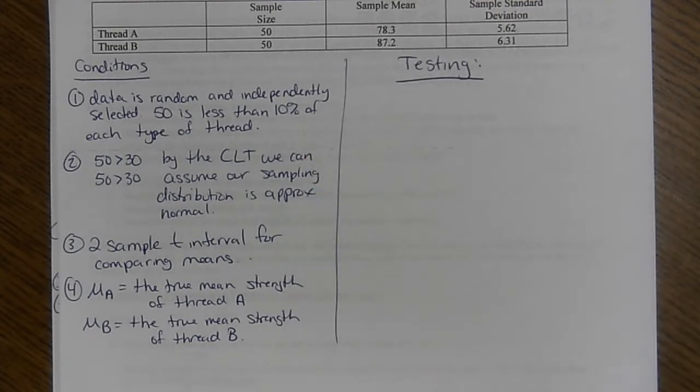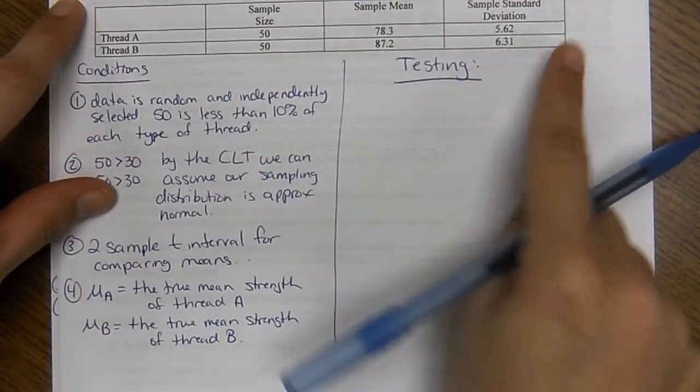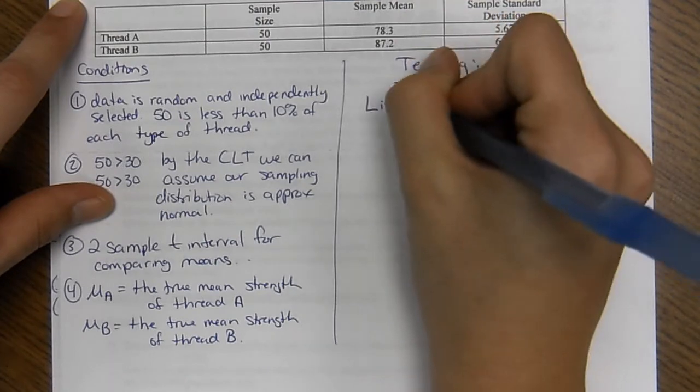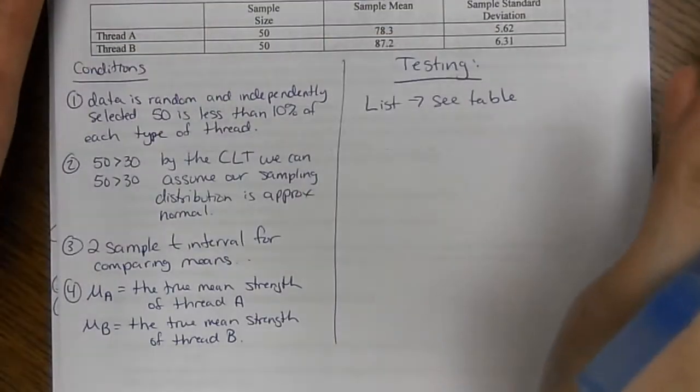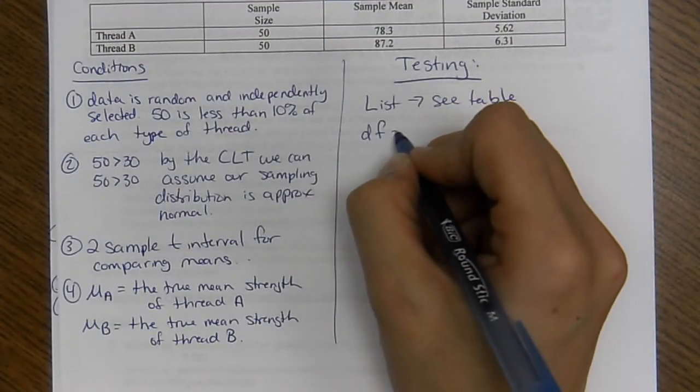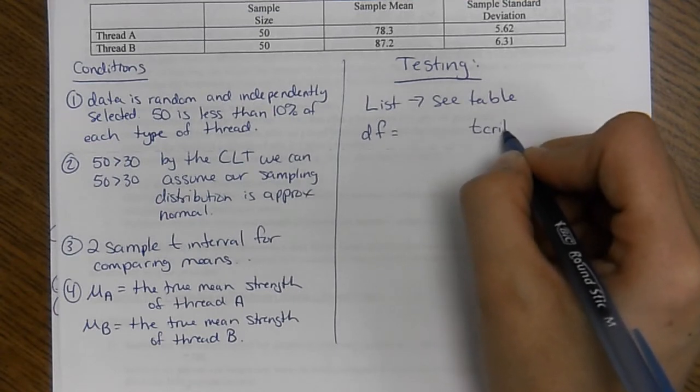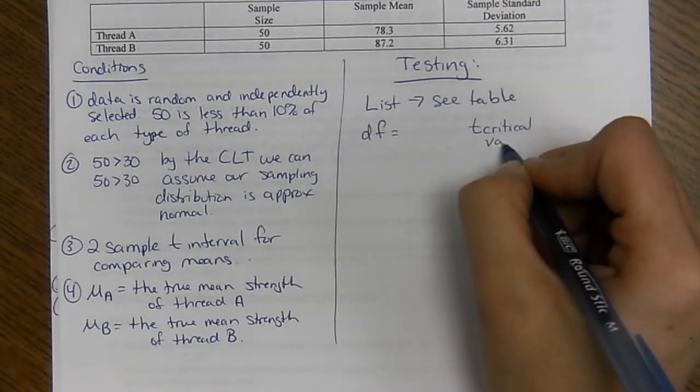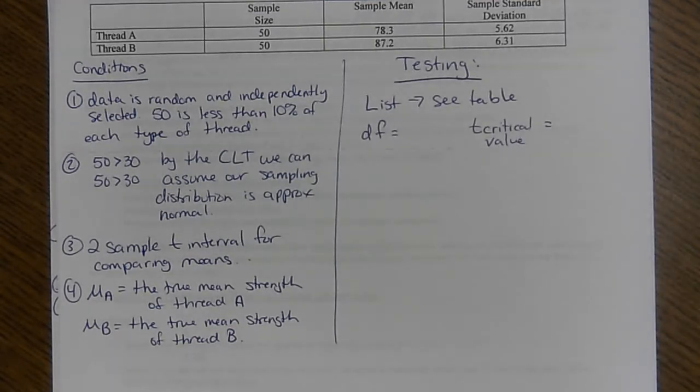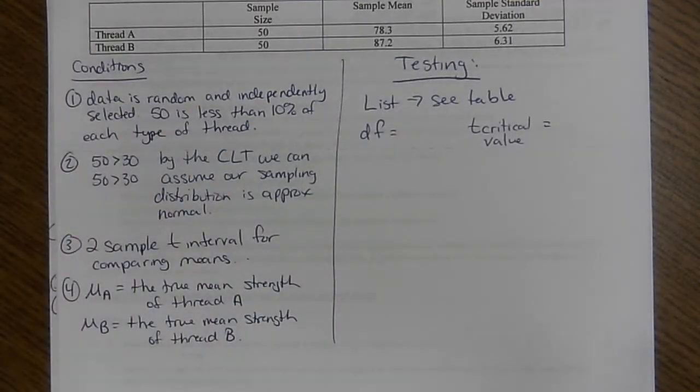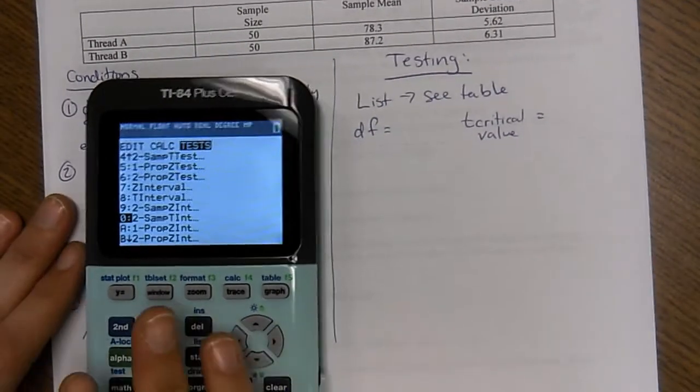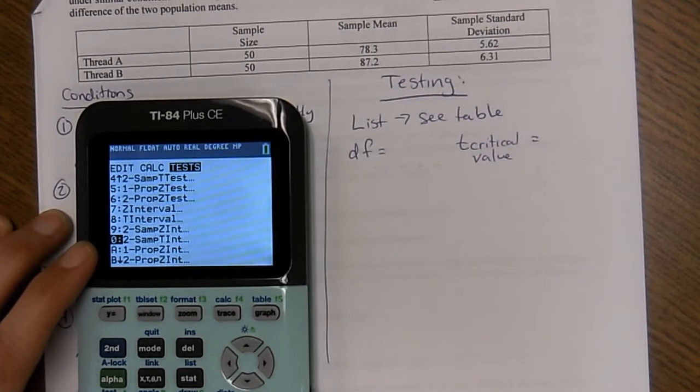So for the testing section, there is no H0 or Ha because we're not testing the hypotheses. Now here's where you can save yourself some time on the test. If everything is given to you in a nice little table, you can just write 'see table.' And you don't have to rewrite it because it's all nice and pretty in a table. But we are going to need degrees of freedom and we are going to need our T-critical value. But we can't find those until after we find our interval because the degrees of freedom is not N-1 anymore. It's a crazy formula.